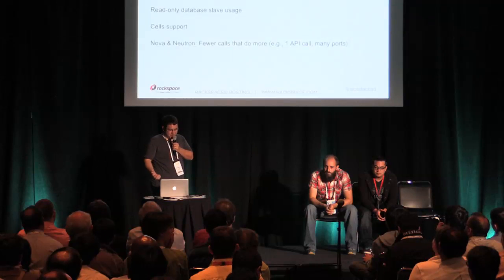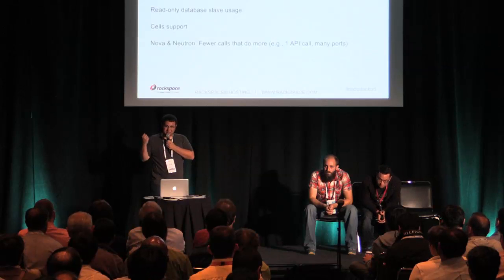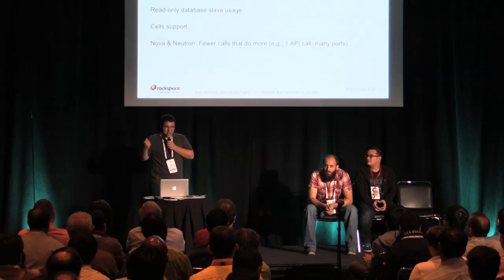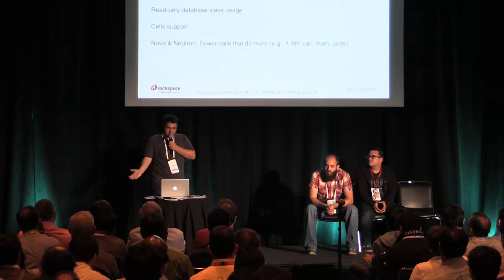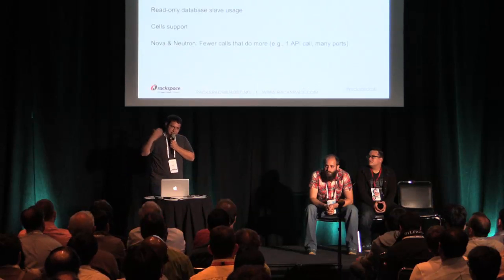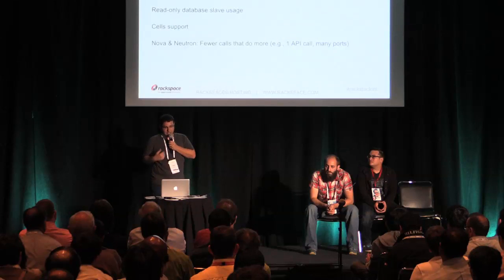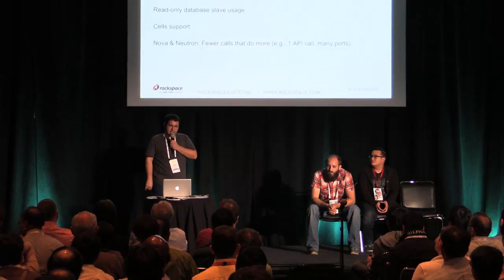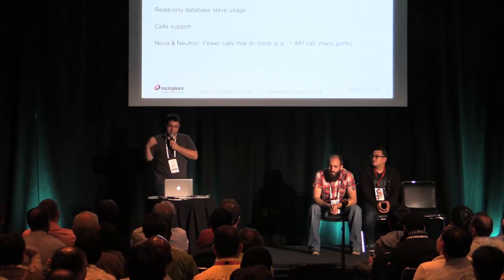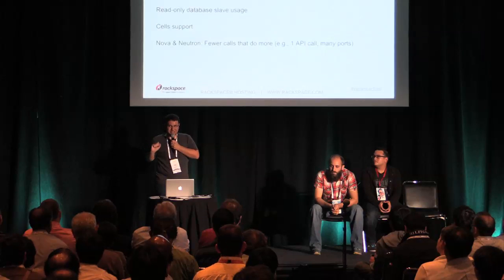We would like to have fewer calls that do more. Building my instance, getting my ports and addresses and all of this — I would really like it to just be one call for all the networks I'm going to need, instead of a back-and-forth that says, okay what do I have, here it is, here's the ports. It's a little too chatty for the scale we're at, so we would just like fewer calls that do more.